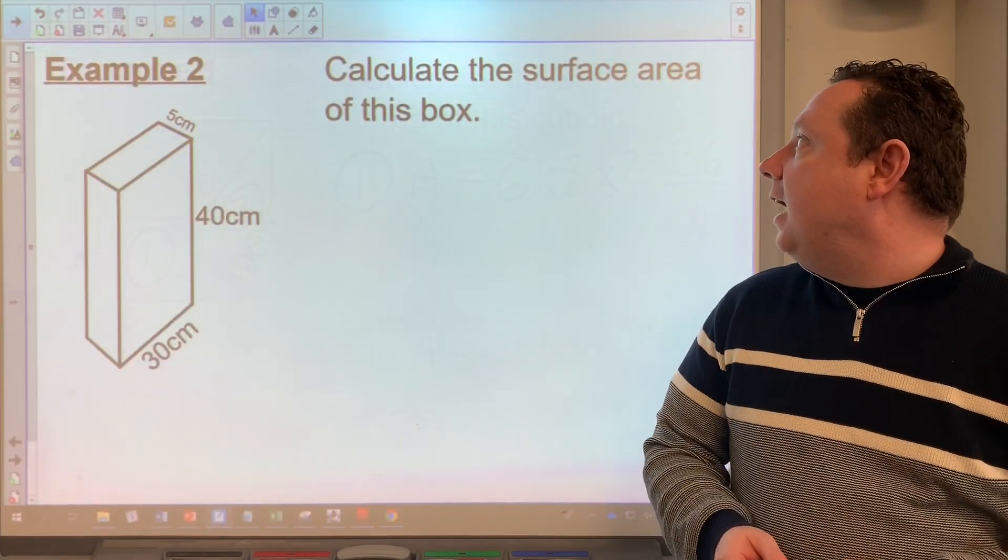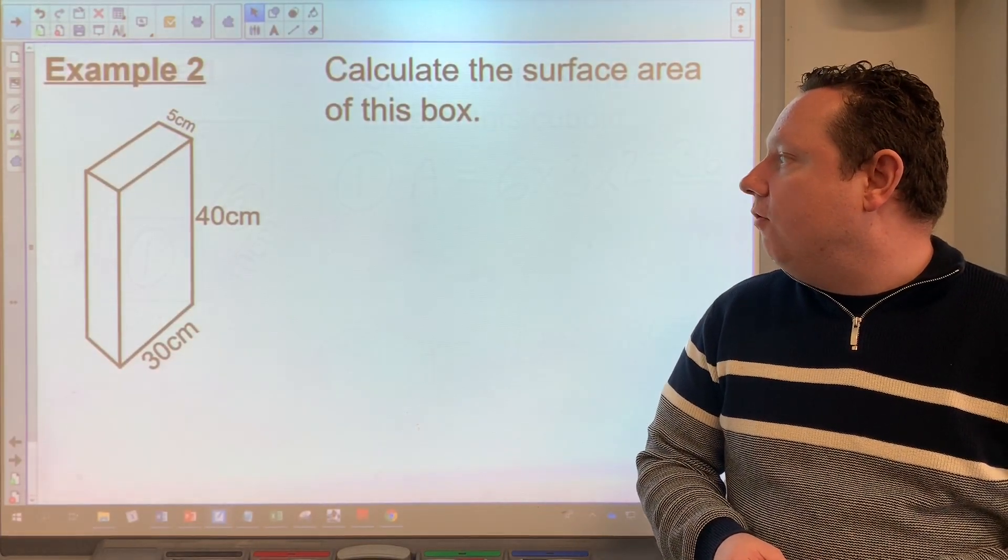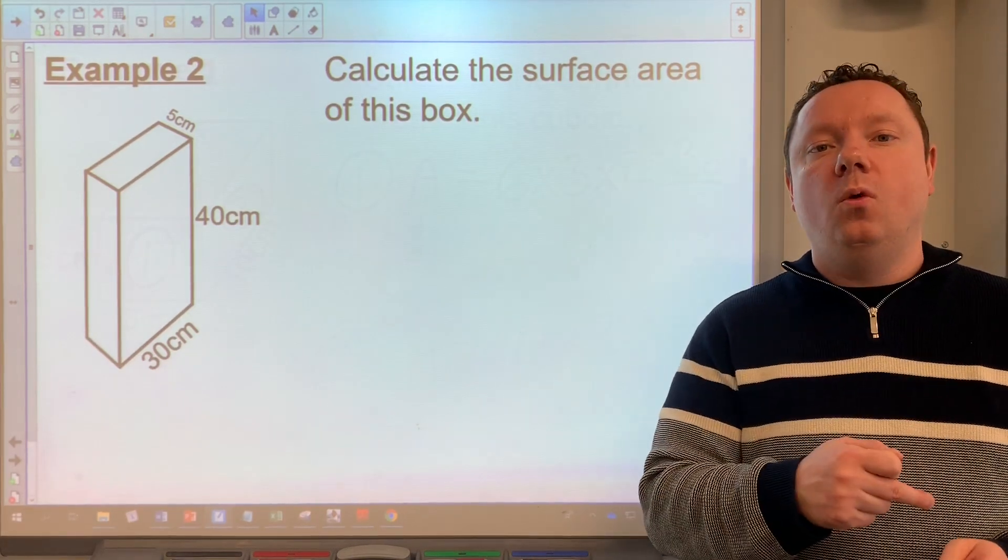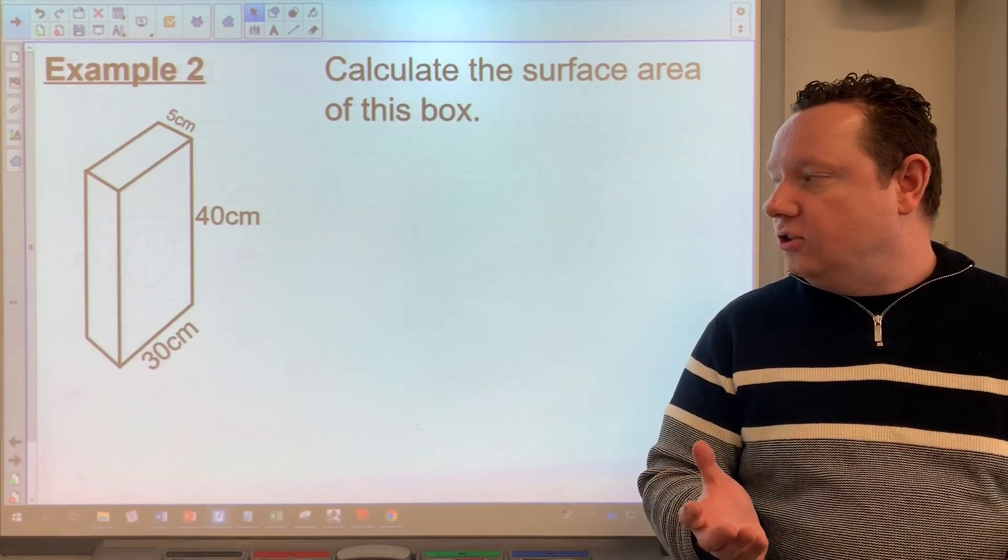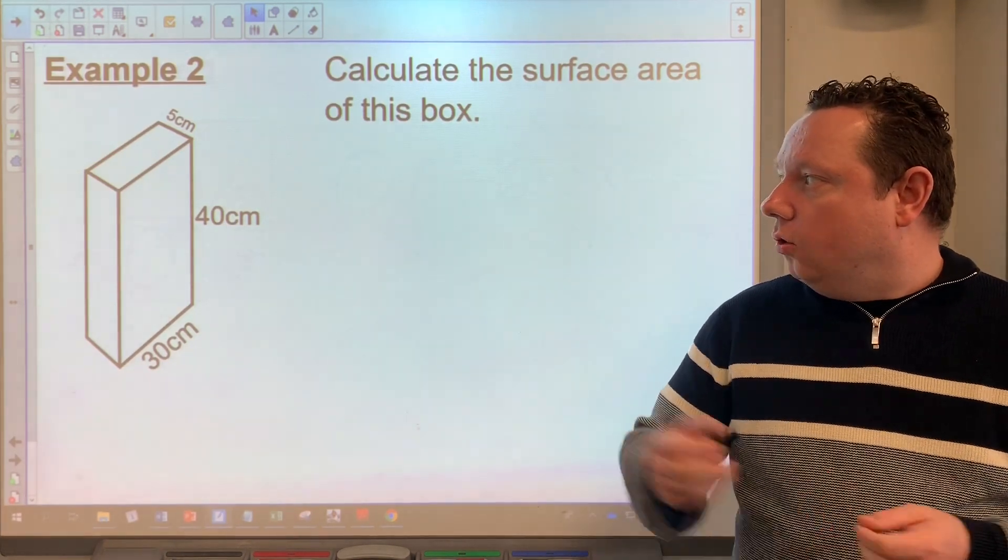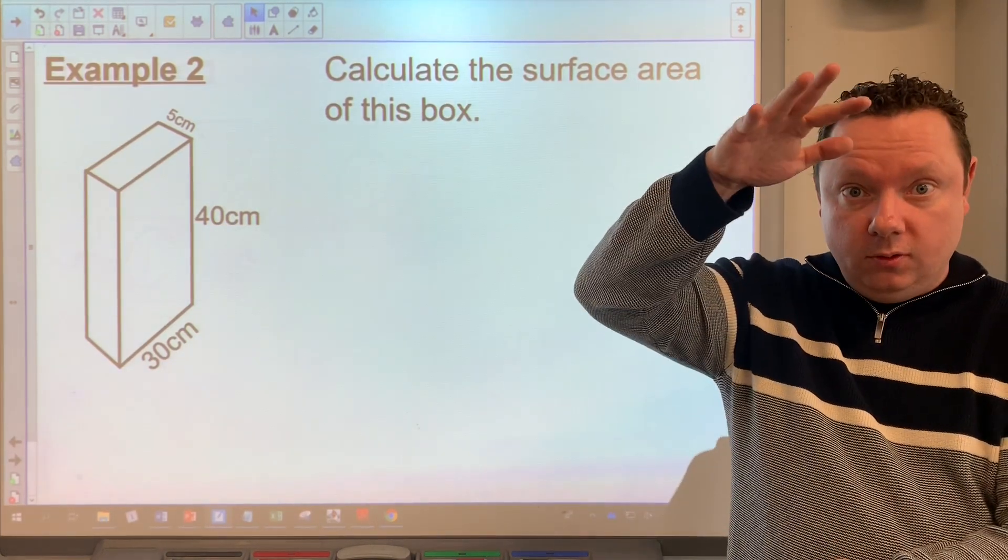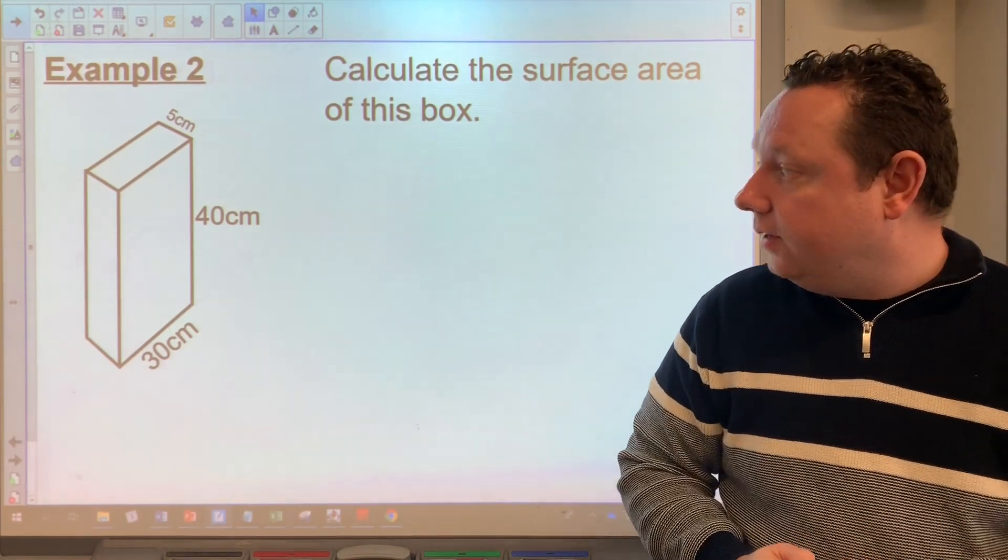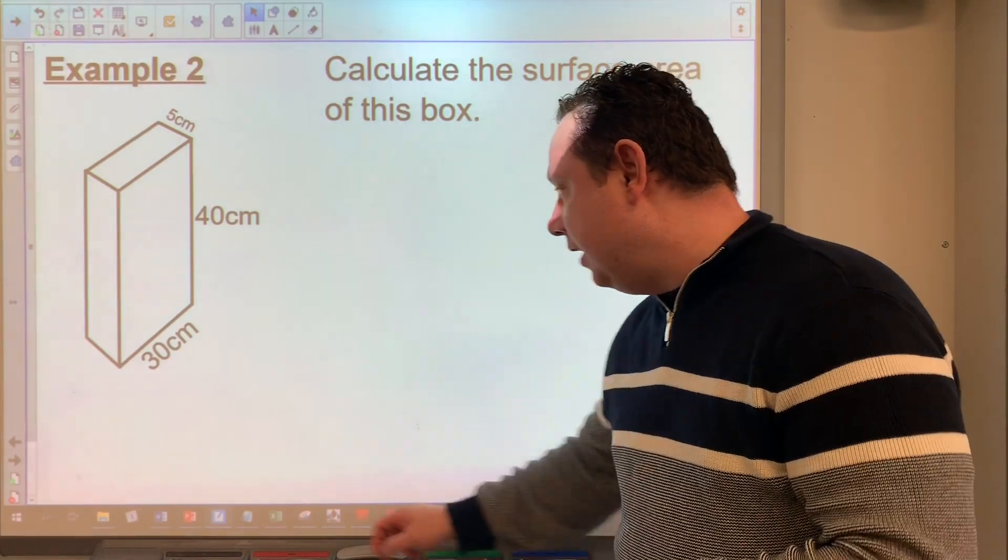Example two says calculate the surface area of this box. So the difference between this example and the previous one was it's not telling us what type of shape it is. We need to know that that's a cuboid. That's fairly obvious. Also, it has been tipped up, so it's up and down the way as opposed to on its side. But that doesn't make much of a difference. So step one, identify my sides.